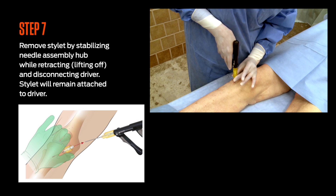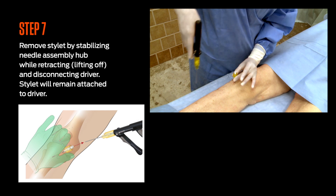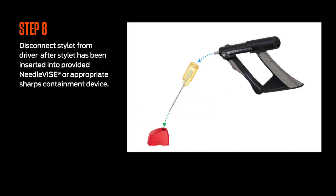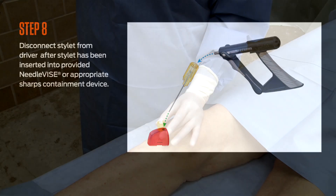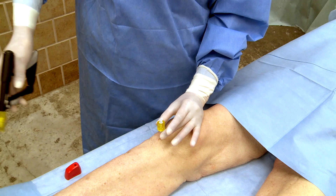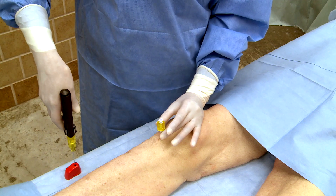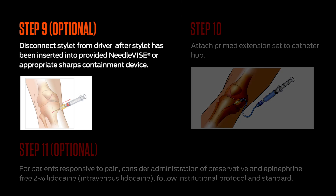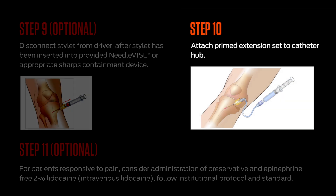Step 7: Remove the stylet by firmly stabilizing the needle assembly hub while simultaneously retracting, lifting off, and disconnecting the driver. Step 8: Disconnect the stylet from the driver. Place the provided needle vise on a flat, stable surface and firmly insert the stylet directly down into the open needle vise. Step 9 (optional): Obtain blood samples for laboratory analysis. Step 10: Attach the primed extension set to the catheter hub and firmly secure by twisting clockwise.